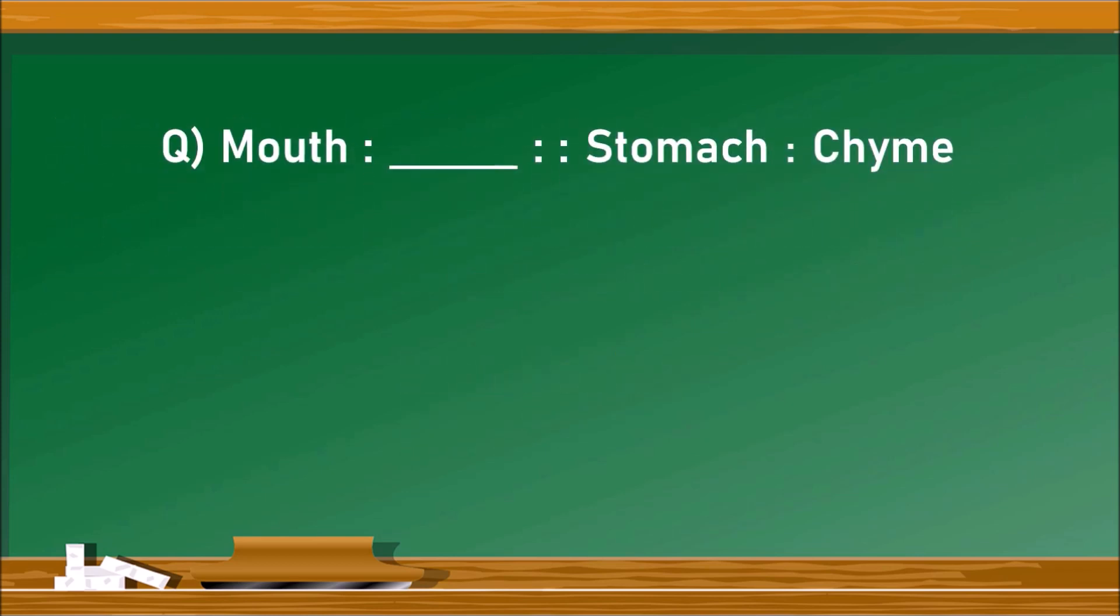Next question. Mouth is to dash whereas stomach is to chyme. So the food which is formed after proper chewing and mixing with saliva is called bolus, whereas the food which is properly ground in the stomach is known as chyme. Hence the answer is bolus.